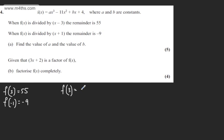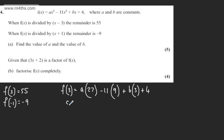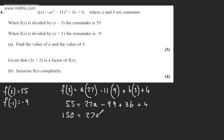f of 3 is going to give me a multiplied by 3 cubed, which is 27. Then we have minus 11 multiplied by 3 squared, which is 9. Then b multiplied by 3, and then plus 4. Tidying this up, we can say that 55 is equal to 27a minus 99 plus 3b plus 4. Doing the calculations, we have 150 is equal to 27a plus 3b.